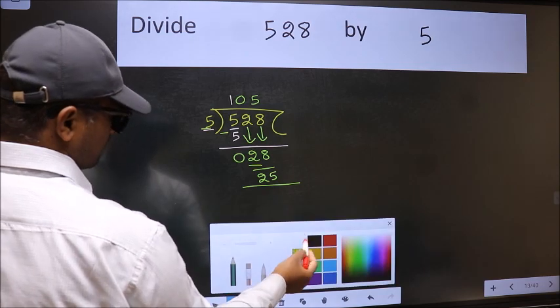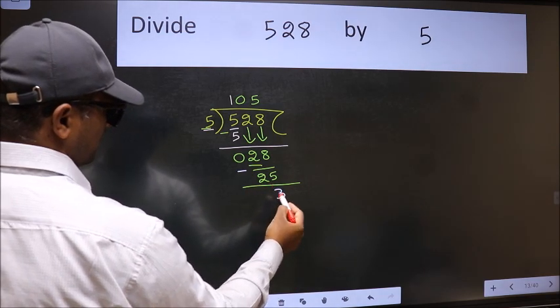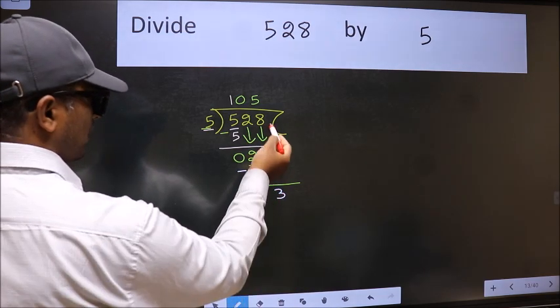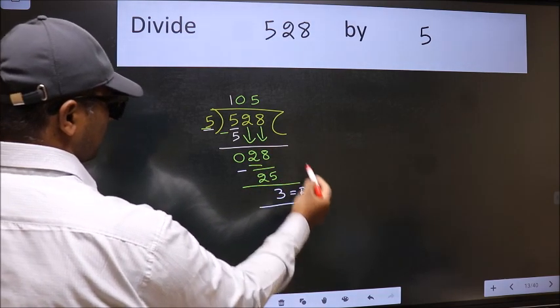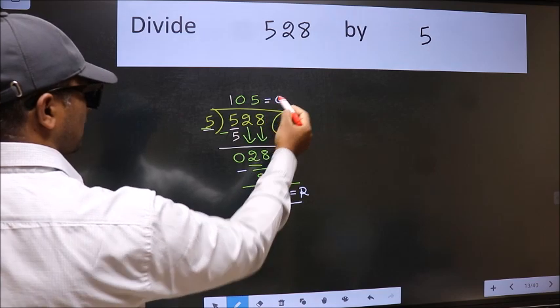Now we should subtract. We get 3. No more numbers to bring it down, so we stop here. This is our remainder and this is our quotient.